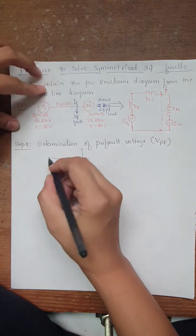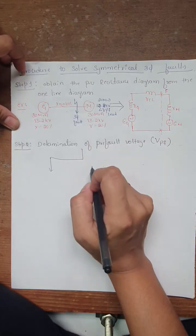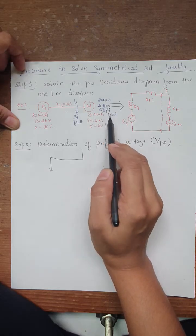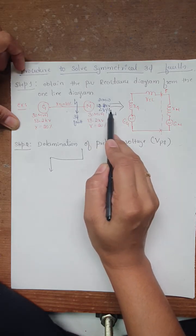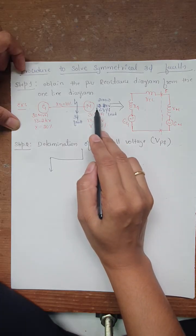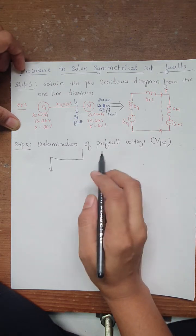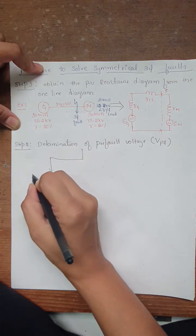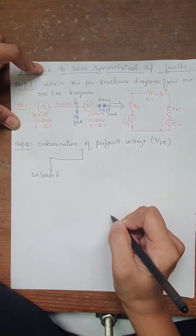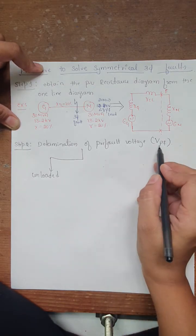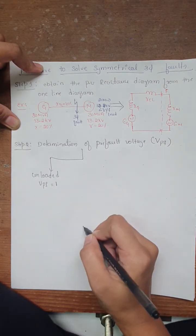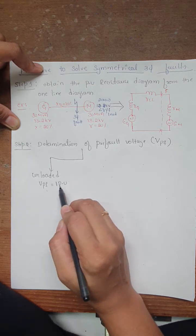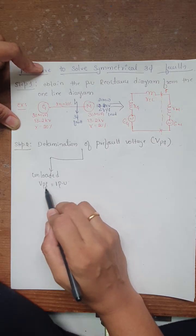We have to consider two cases for the calculation of VPF — whether the system is loaded or unloaded. Suppose ratings like 20 megawatt, 12.8 kilovolt, 0.8 power factor leading are given; these details indicate that the motor is loaded. If these three details are not given on the load side, it is understood that the system is unloaded. In Case 1, the system is unloaded, and VPF will be equal to 1.